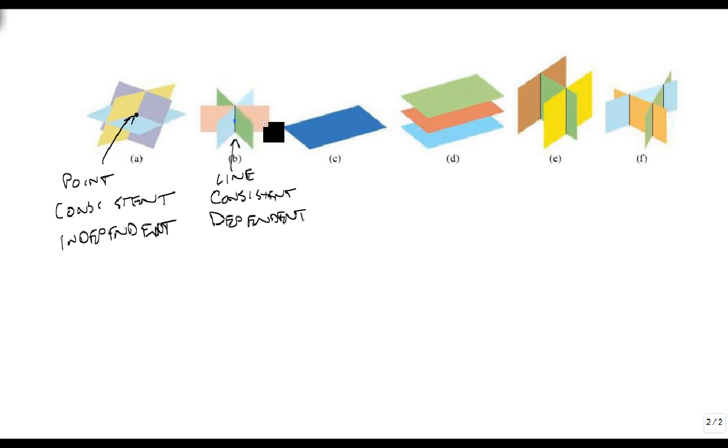So we'd pick one point, and that would give us the rest of our graph. C is an interesting case. In this case, they're all the same. So this is again consistent because it has answers, but it's dependent again. So when they're all the same, this means all three equations are the same.